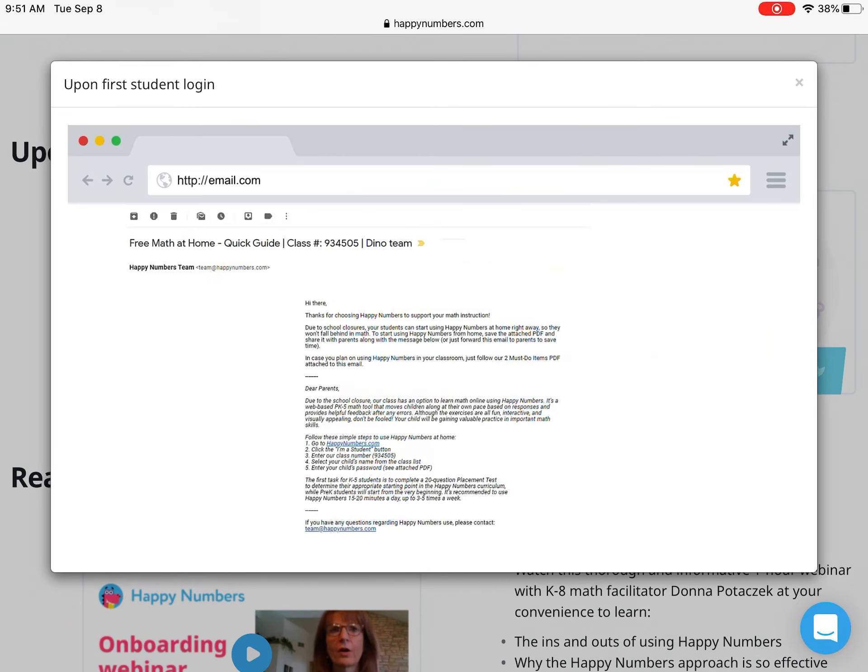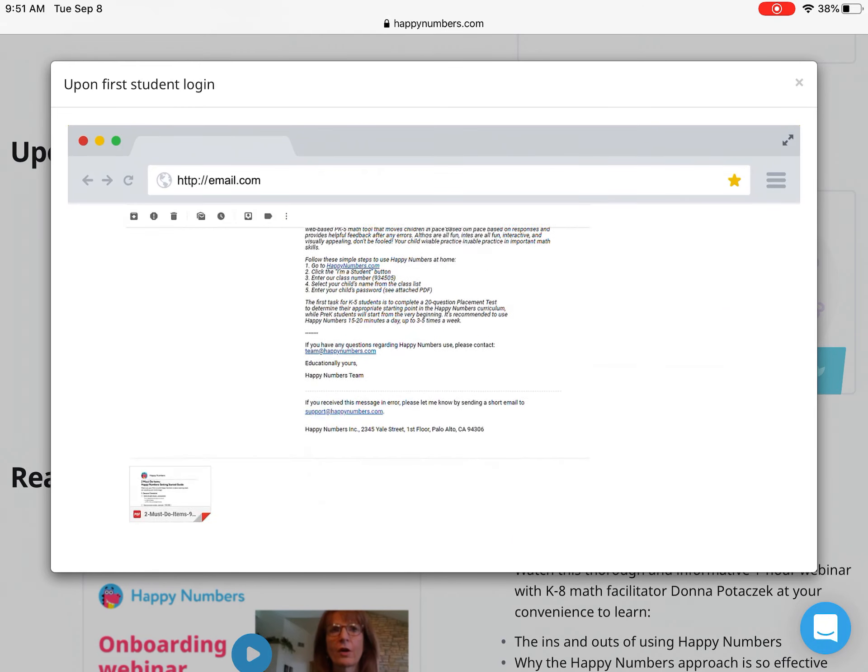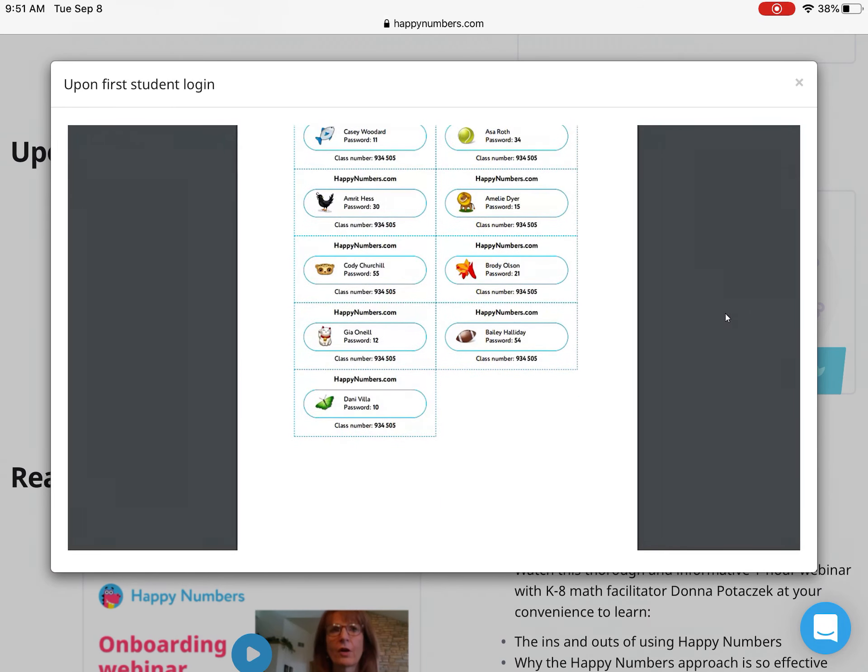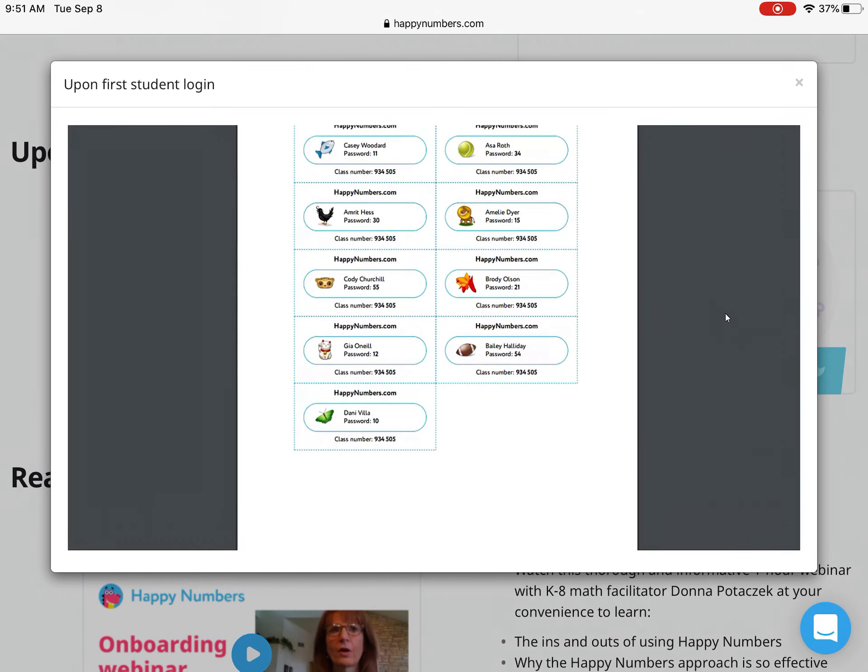Class number and login. By now you should have received an email with an attachment that looks like this. It contains your unique class number and a list of student passwords. You'll want to forward this information to parents so their child can log on from any device at home.